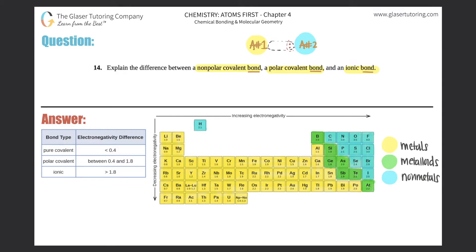One atom can be super greedy and take all the electrons for itself. You can see how the two electrons are super close to atom number two, basically leaving atom number one with nothing — literally no electrons. So that's going to be the key difference.